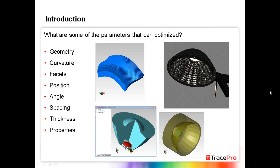As a quick review, some of the things we can optimize include: geometry, curvature, facets, position, angles, spacing, and thickness. We can also optimize properties. Anybody interested in learning how to use the optimizer to optimize a particular surface property or choose diffusers from a catalog should look at our May 2014 webinar done in conjunction with LED Professionals Magazine, which covered scanning through a series of properties in a catalog.